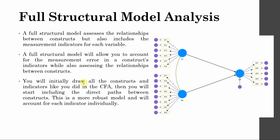You will initially draw all the constructs and indicators like you did in CFA — adding your latent variables with the indicators as in the measurement model. Then you start including the direct paths between the constructs to show how the latent variables are related. This is a more robust model and will account for each indicator individually.